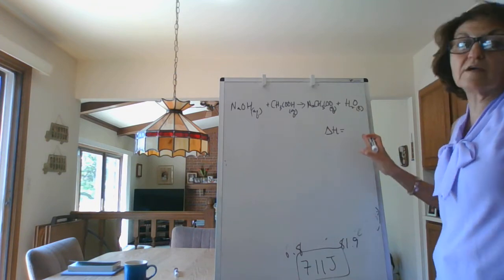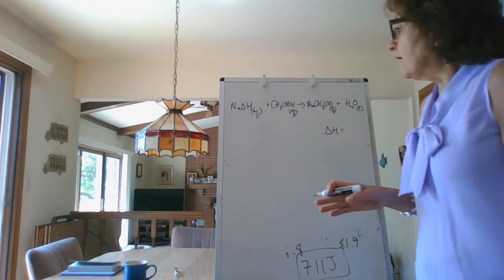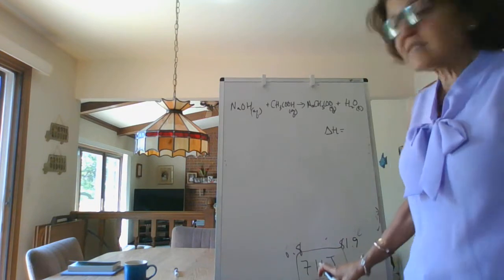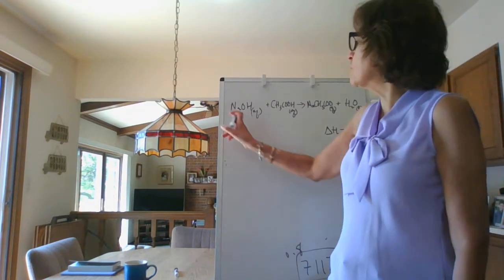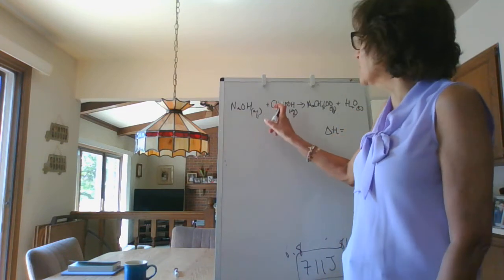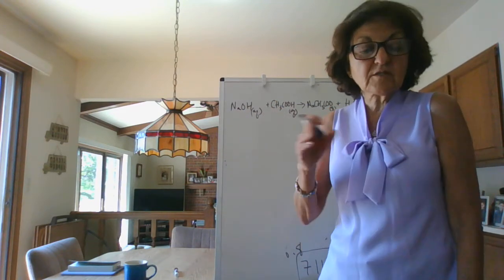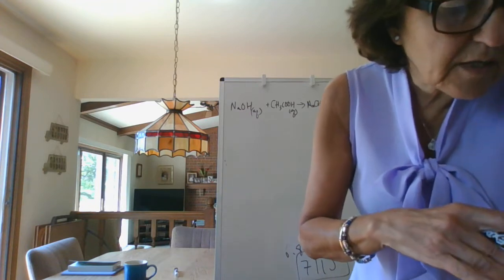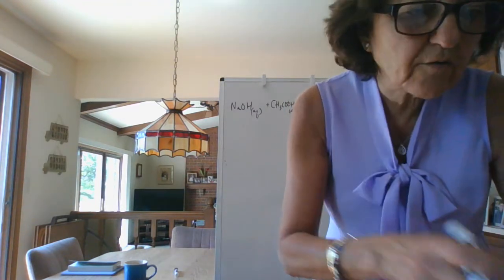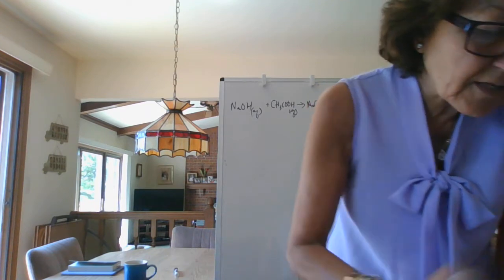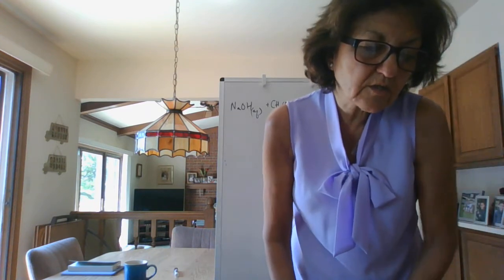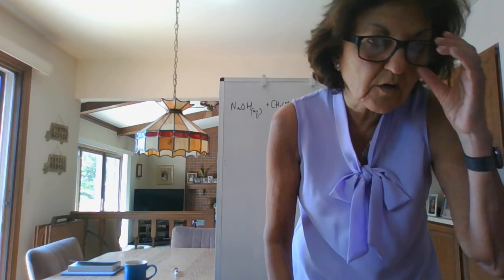We can't put the 711 because the 711 wasn't for one mole of this reacting with one mole of this. The 711 was for 25 milliliters of whatever that molarity was. So we need to find out which one's the limiting reactant so that we know how many moles are actually reacting here.